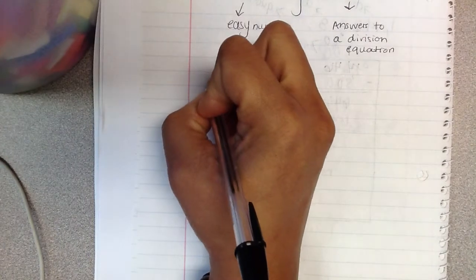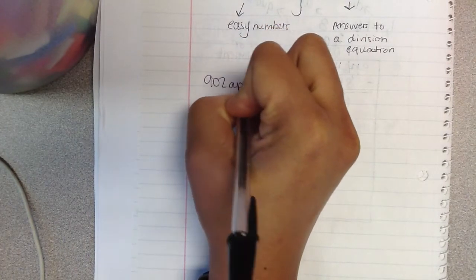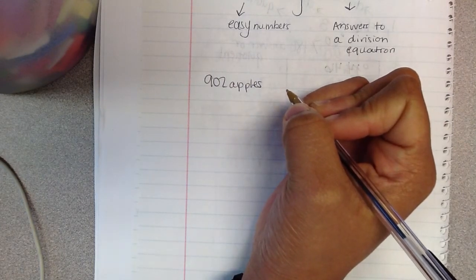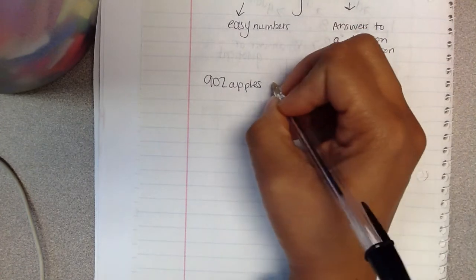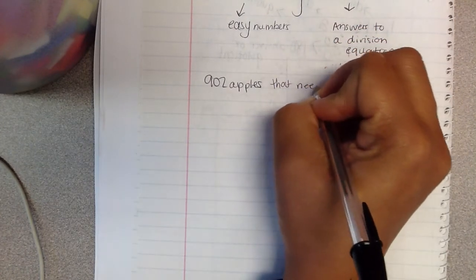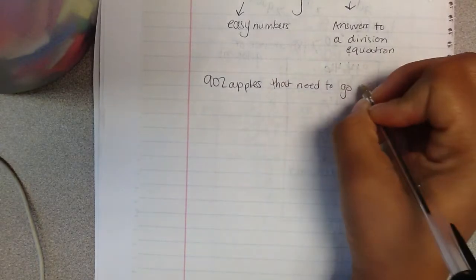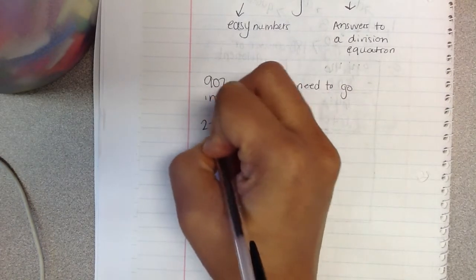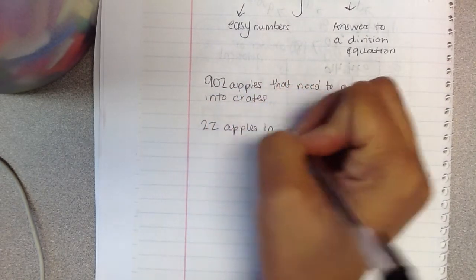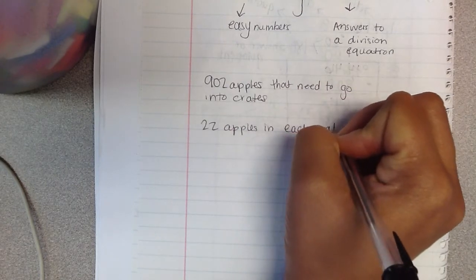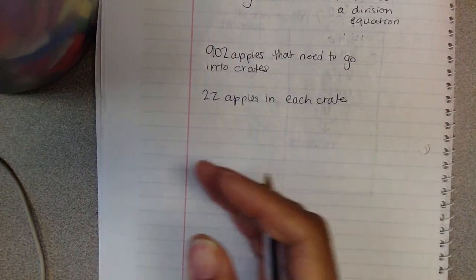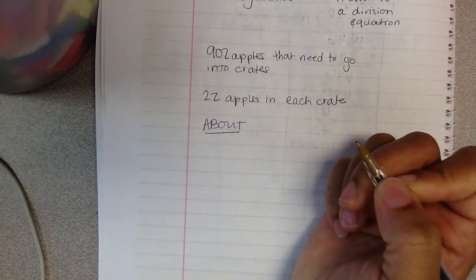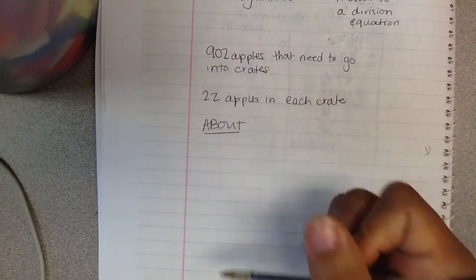Alright, so we have Kendall who picked 902 apples. And he's going to pack them in crates to sell at the farmer's market. Each crate holds 22 apples. So 902 apples that need to go into crates. And he's going to put 22 apples in each crate. And it wants to know about, that's our key word there, about how many crates will Kendall fill. So this means not exactly, but about how many. So we'll use our estimation strategies.